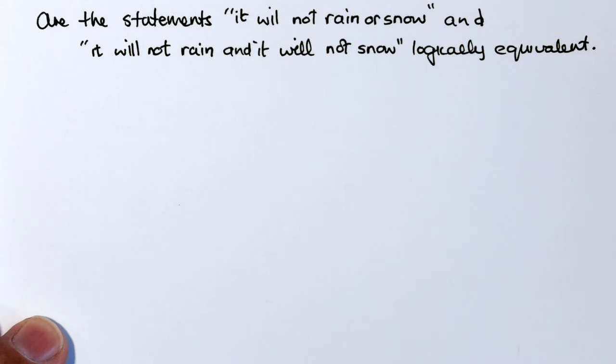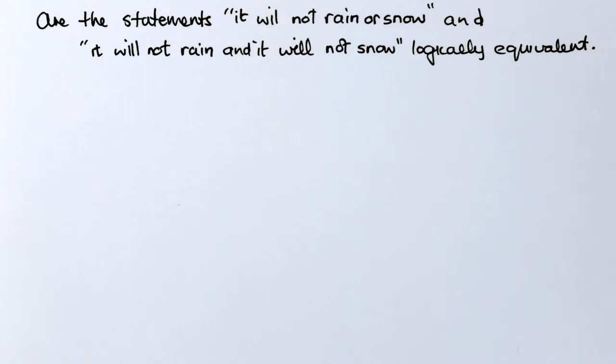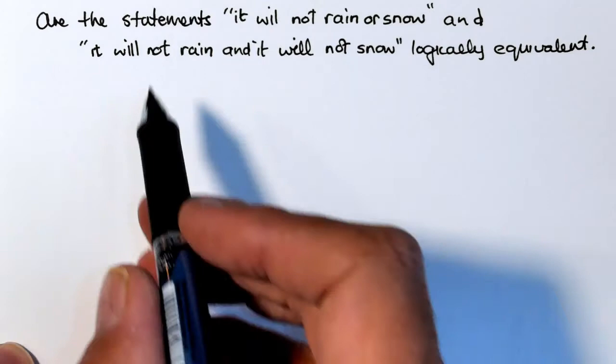Now sometimes rephrasing a mathematical statement can often lend insight into what it is saying or how to prove or refute a statement. Using truth tables can systematically verify that two statements are indeed logically equivalent. So let's see what the statement is saying.